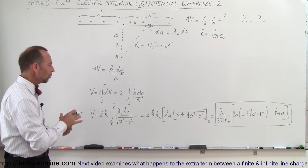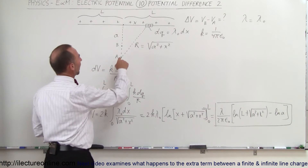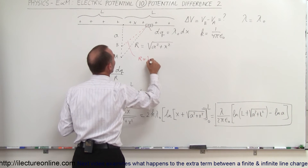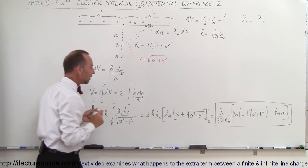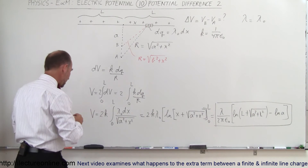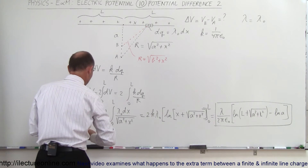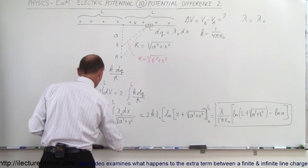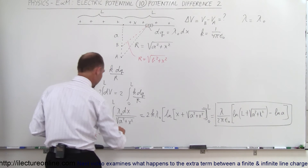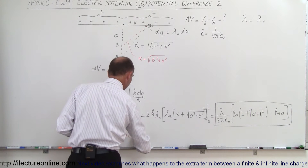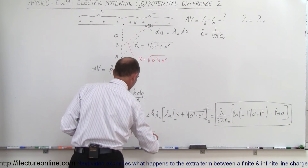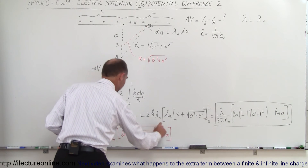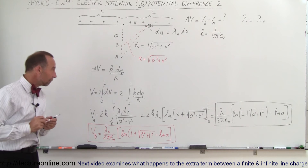Now what about the potential at B? We do exactly the same thing, but with a slightly different triangle where R = sqrt(B² + x²). So the potential at B is V_B = lambda sub-naught over 2π epsilon sub-naught times the natural log of (L + sqrt(B² + L²)) minus the natural log of B.